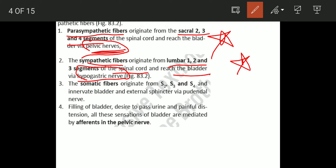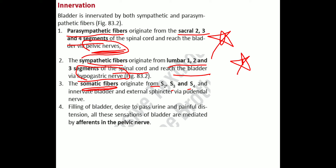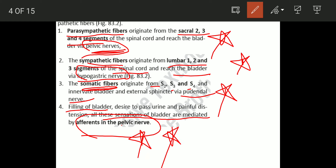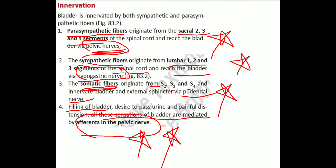The somatic fibers originate from S2, S3, and S4 and innervate the bladder and external sphincter via the pudendal nerve — important in both anatomy and physiology. Bladder filling, desire to pass urine, painful distension — these sensations are mediated by afferents in the pelvic nerve.